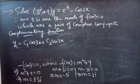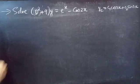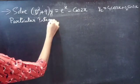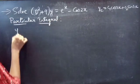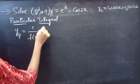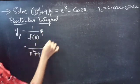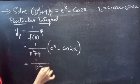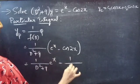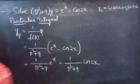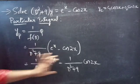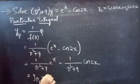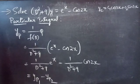Now let's find the particular integral. The particular integral is given by (1/f(D))·Q. We have f(D) = D² + 9 and Q = e^x − cos 2x. We can write this as [1/(D² + 9)]·e^x minus [1/(D² + 9)]·cos 2x. We find each term separately: let yp1 = [1/(D² + 9)]·e^x and yp2 = [1/(D² + 9)]·cos 2x.